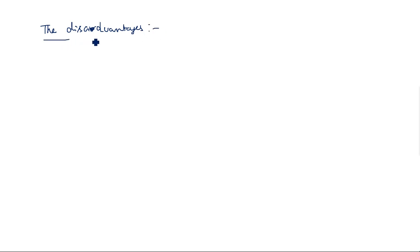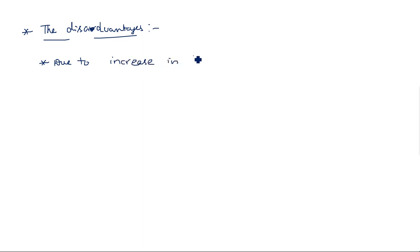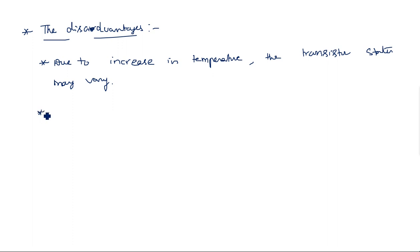Now the disadvantages. As temperature increases, the reverse saturation current ICBO may increase sufficiently to bring Q1 into the active region and may even take Q2 out of saturation. Due to the increase in temperature, the transistor states may vary. Because there is no coupling element and they are directly connected, the original bistable feature of the multivibrator is violated — a transistor can switch from ON to OFF or OFF to ON unintentionally.